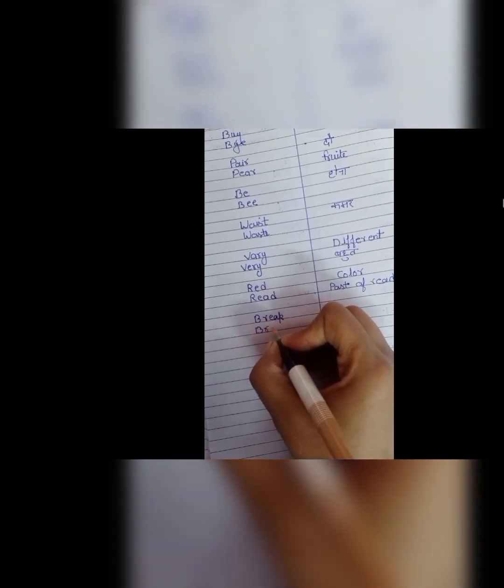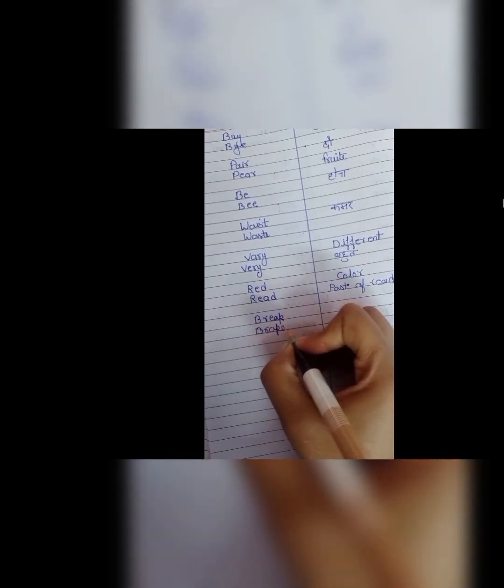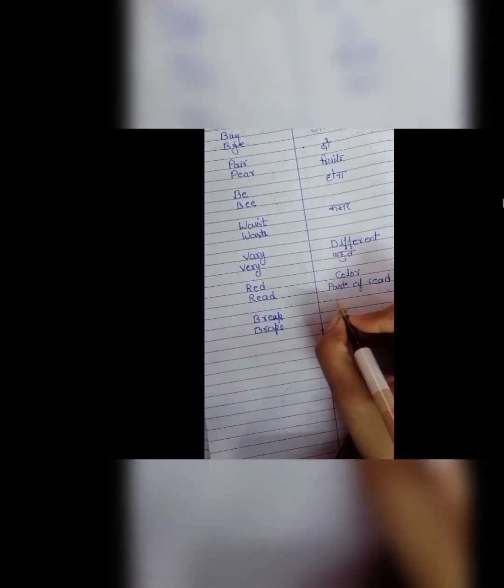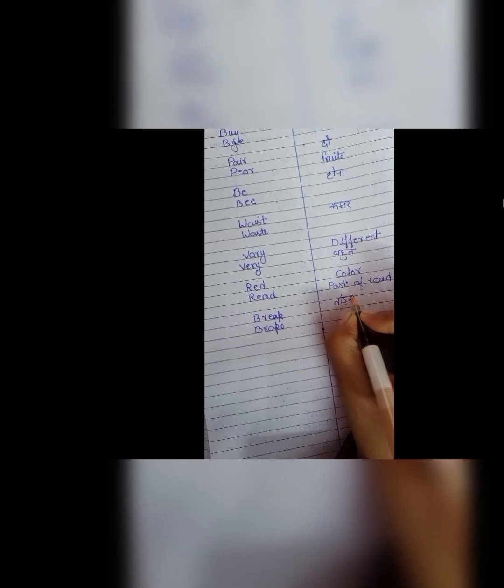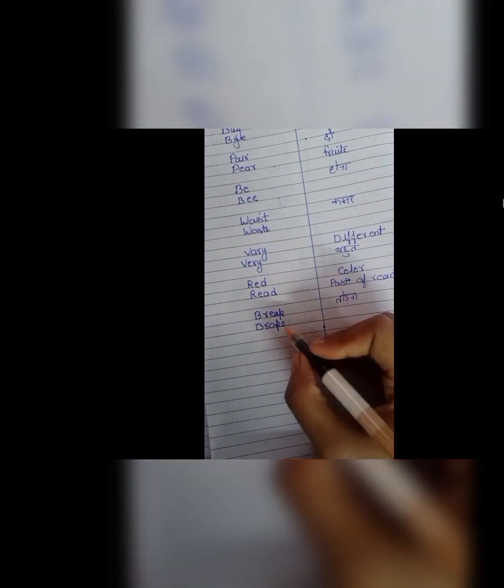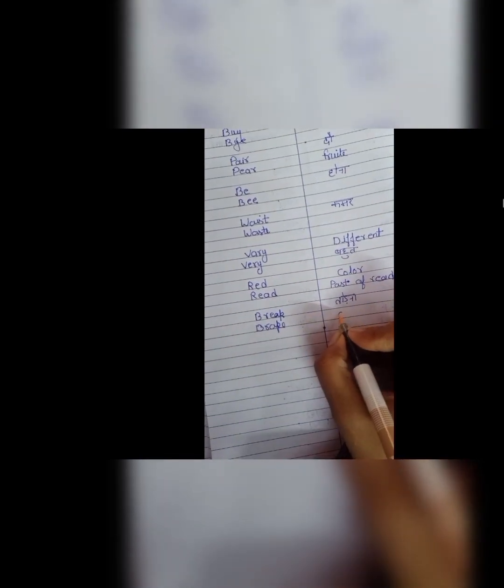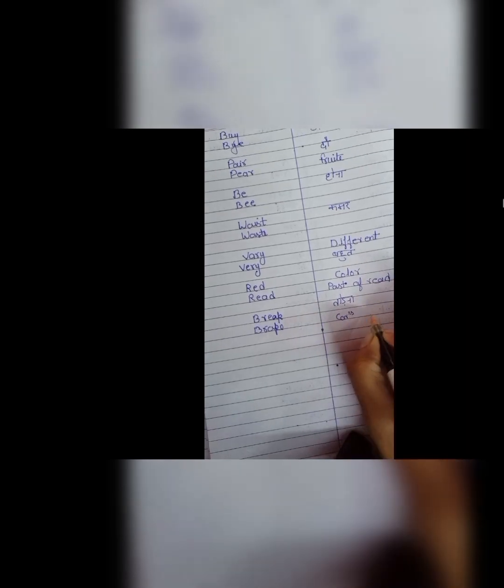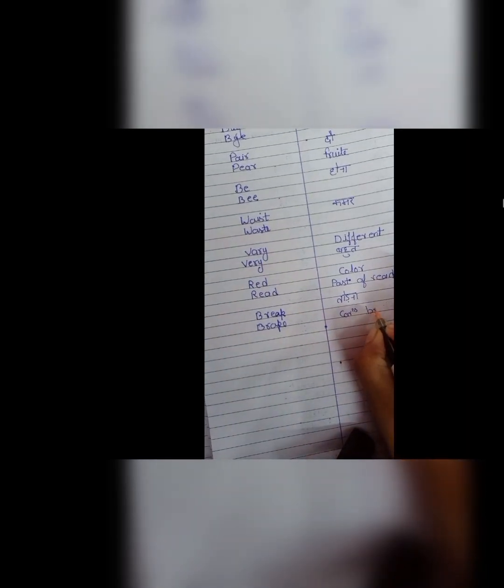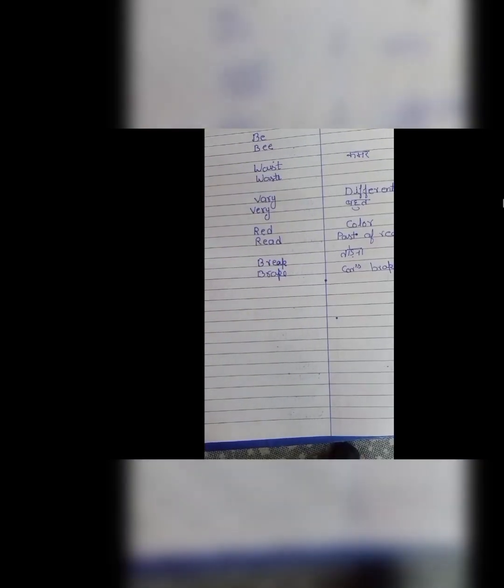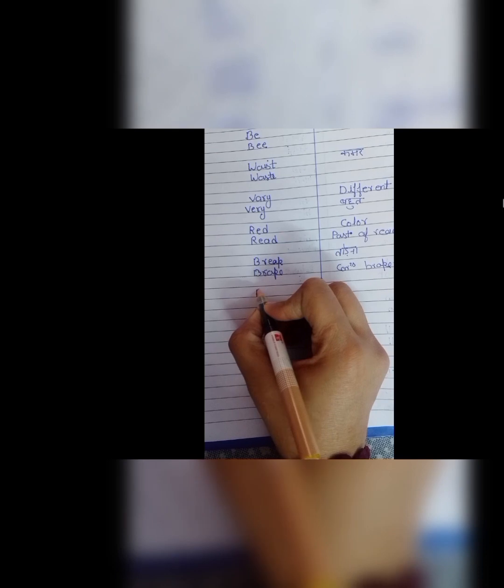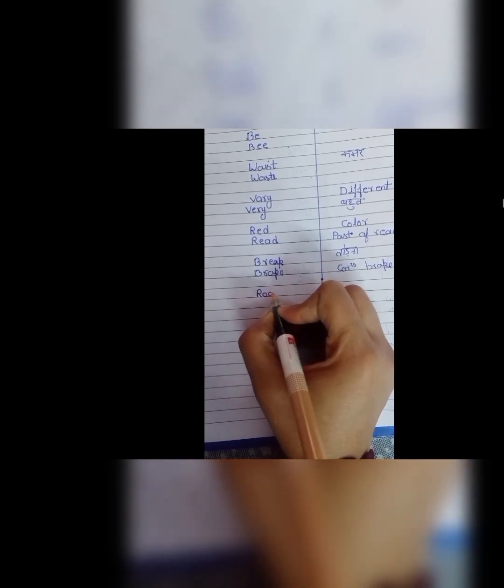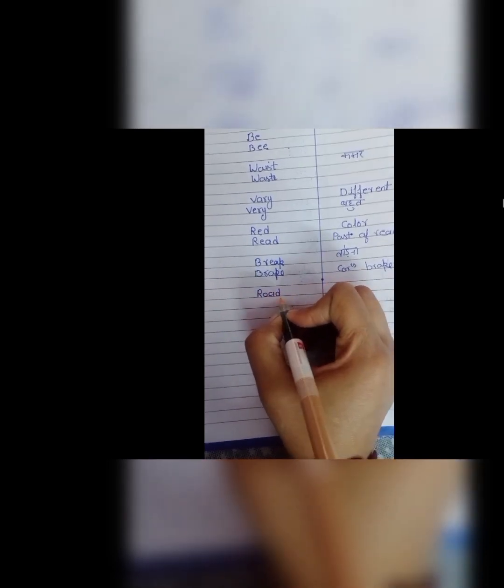Next is break and brake. B, R, E, A, K, break means todna koi chiz. Ye jho hamen school me break milta hai ye wahi wala break. Iska homophone hai B, R, A, K, E, brake. Ye brake hai car me jho brake hoota hai woh wale brake B, R, A, K, E.